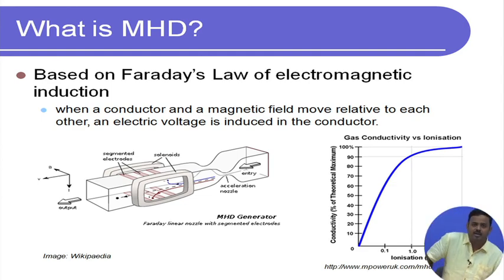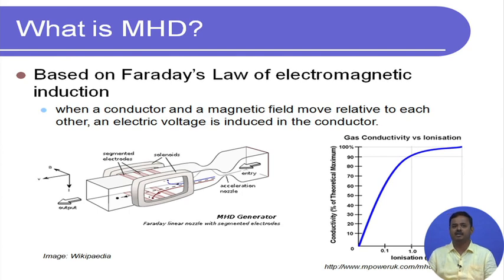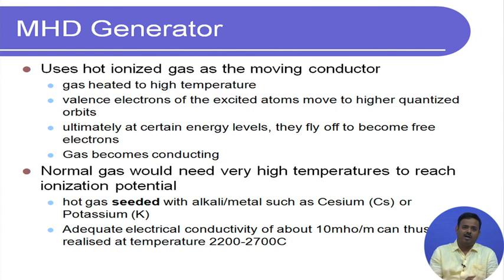This is the basic working principle of magnetohydrodynamics. We have an external magnetic field applied on a duct through which a hot ionized gas flows at very high temperature. Because it is ionized it is a conductor — a moving conductor — and therefore due to Faraday's law of electromagnetic induction, we get an electric voltage in the third direction.